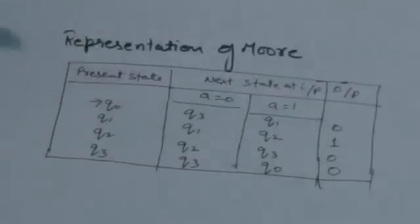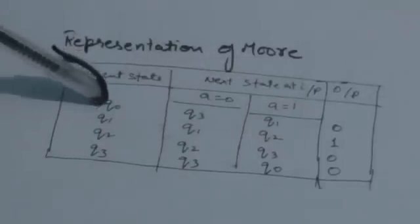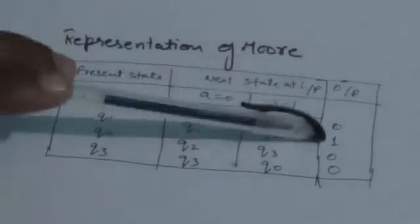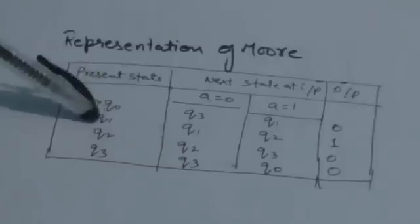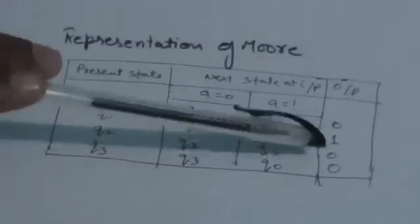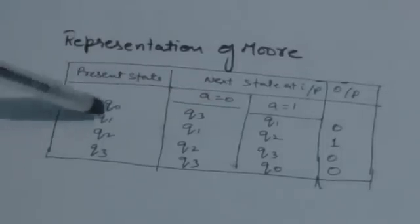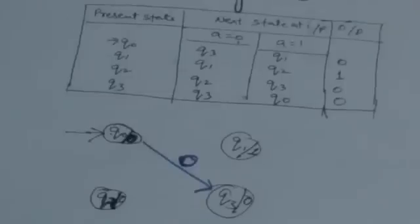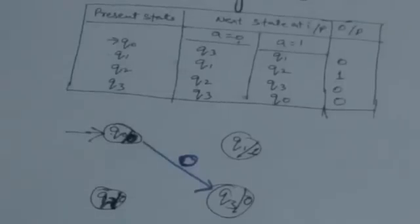In these two columns, the next state transitions of the Moore machine have been represented. The last column represents the output associated with each present state: 0 is associated with state q0, 1 is associated with state q1, and 0 is associated with both q2 and q3.